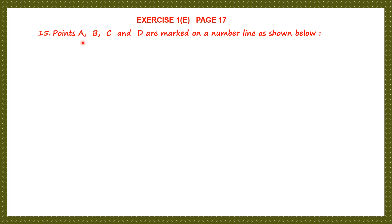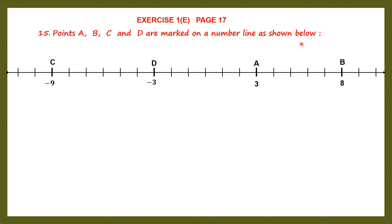Points A, B, C and D are marked on a number line as shown below. You can see the points here: A, B, then C and D, and each point has a value. A is 3, B is 8, C is minus 9, and D is minus 3.